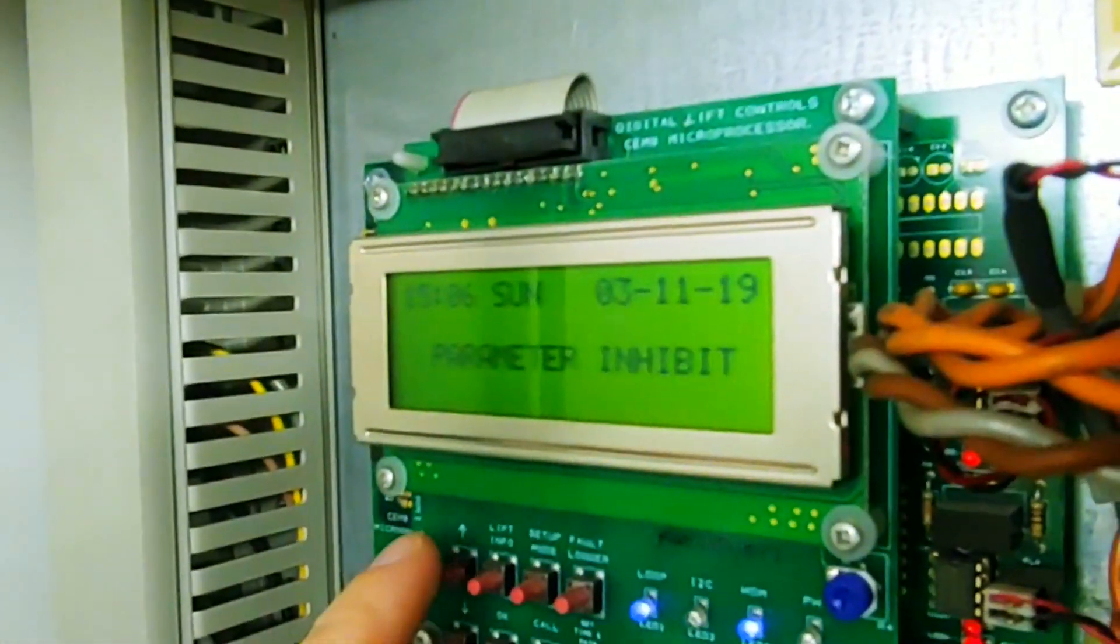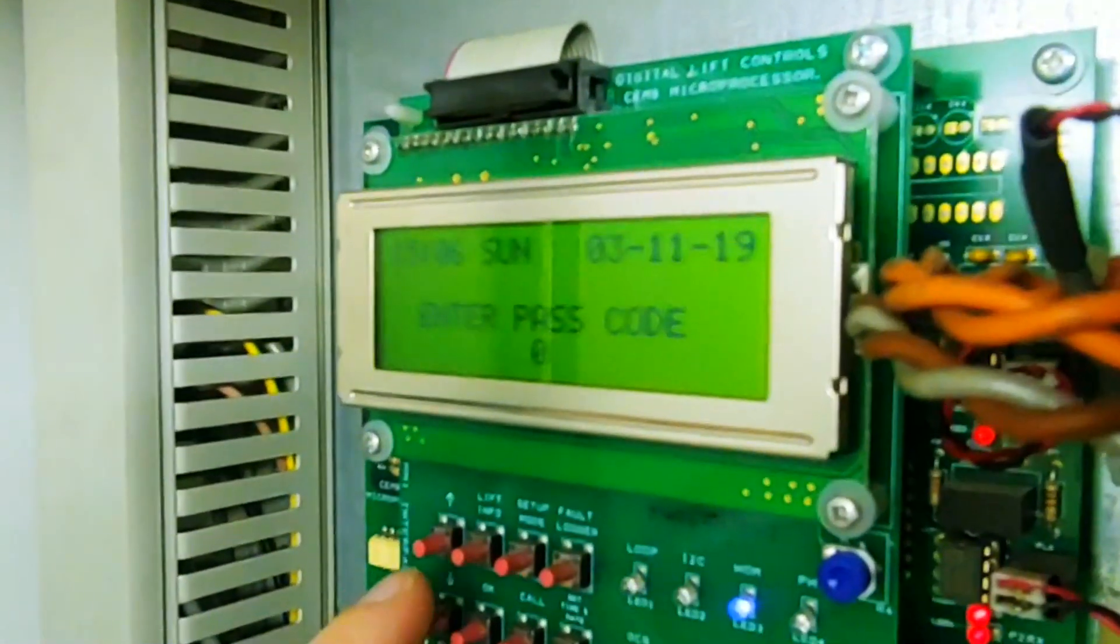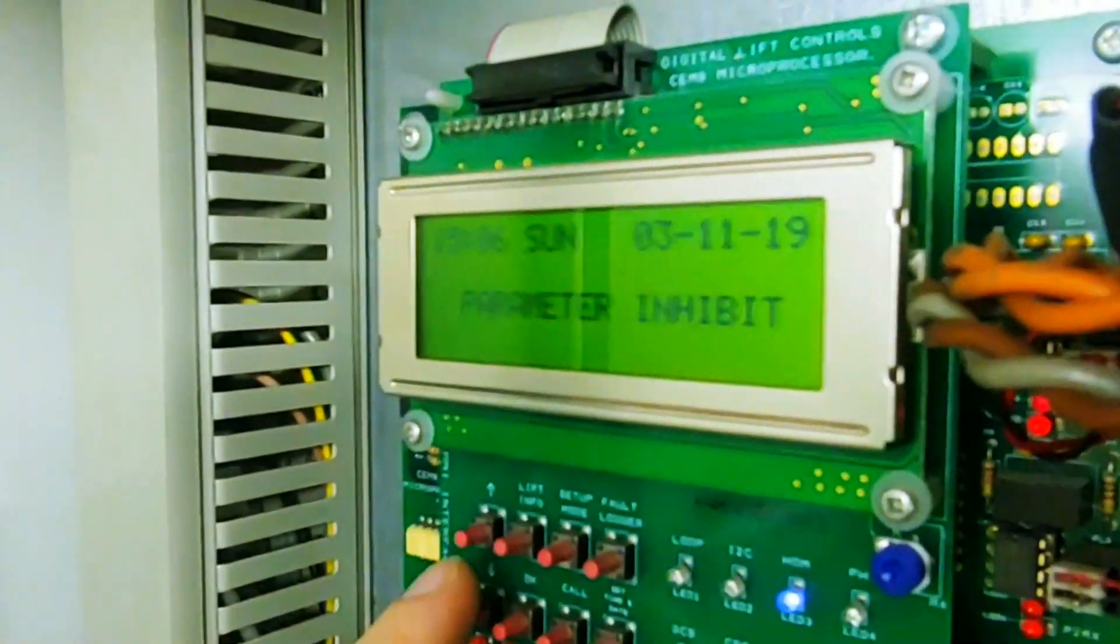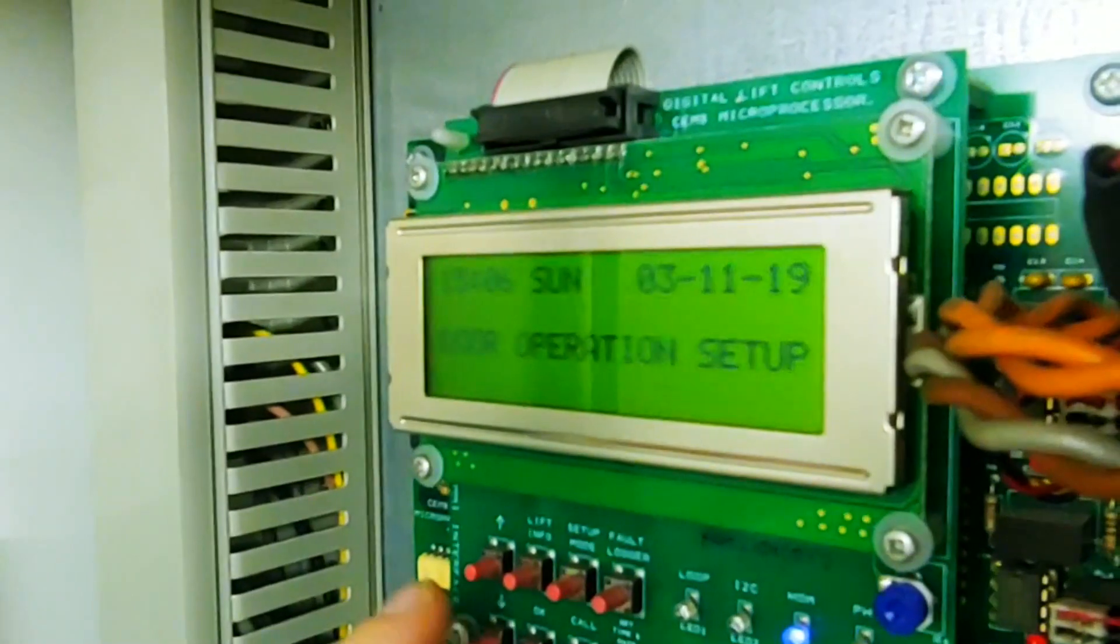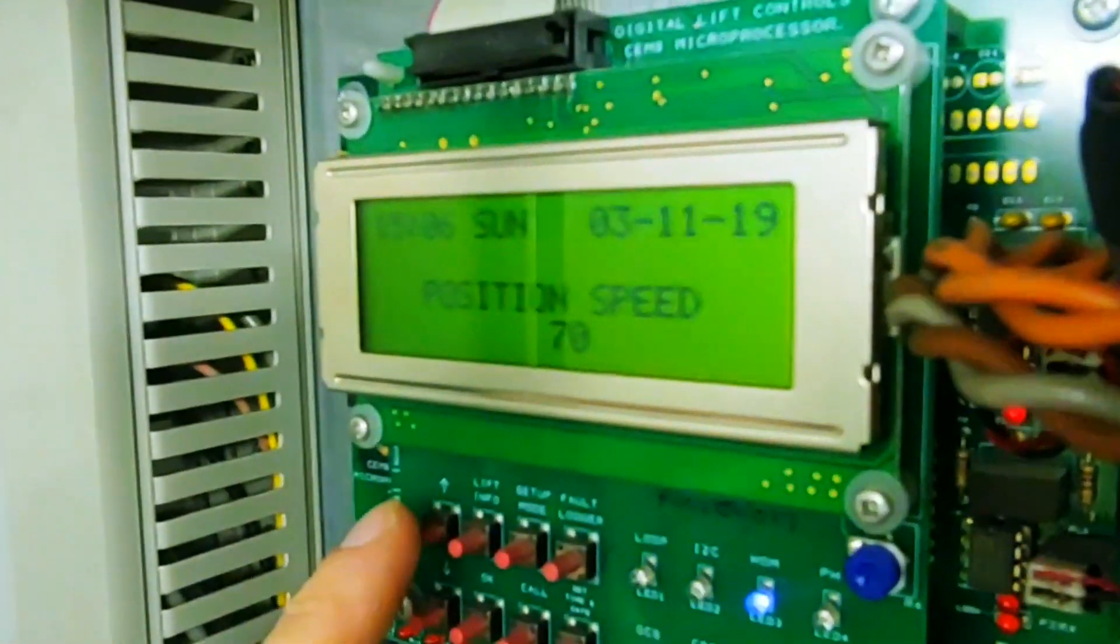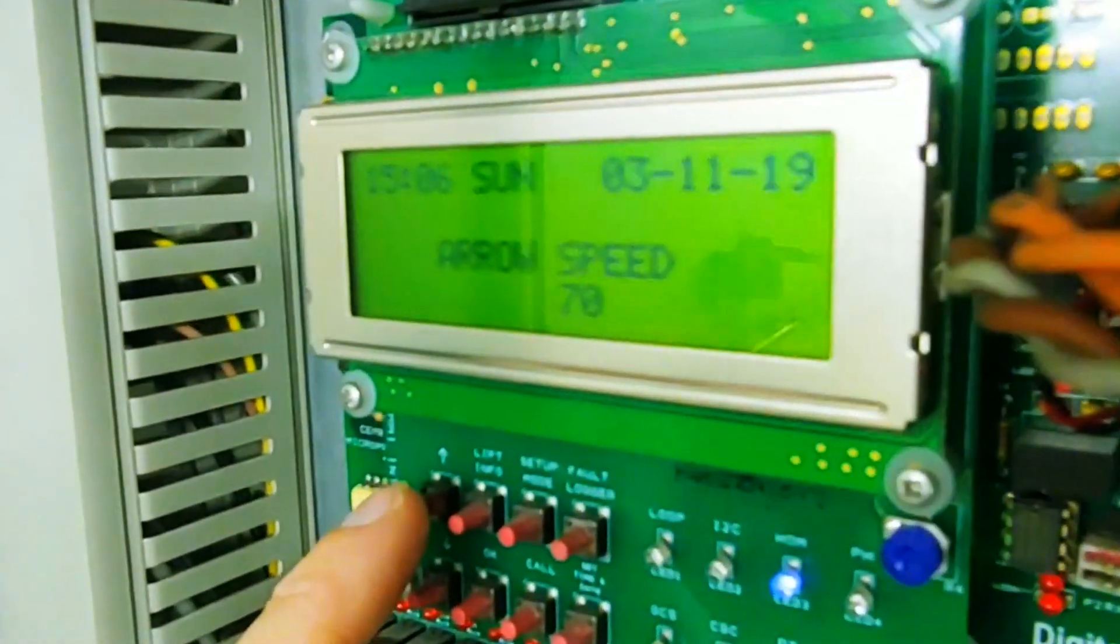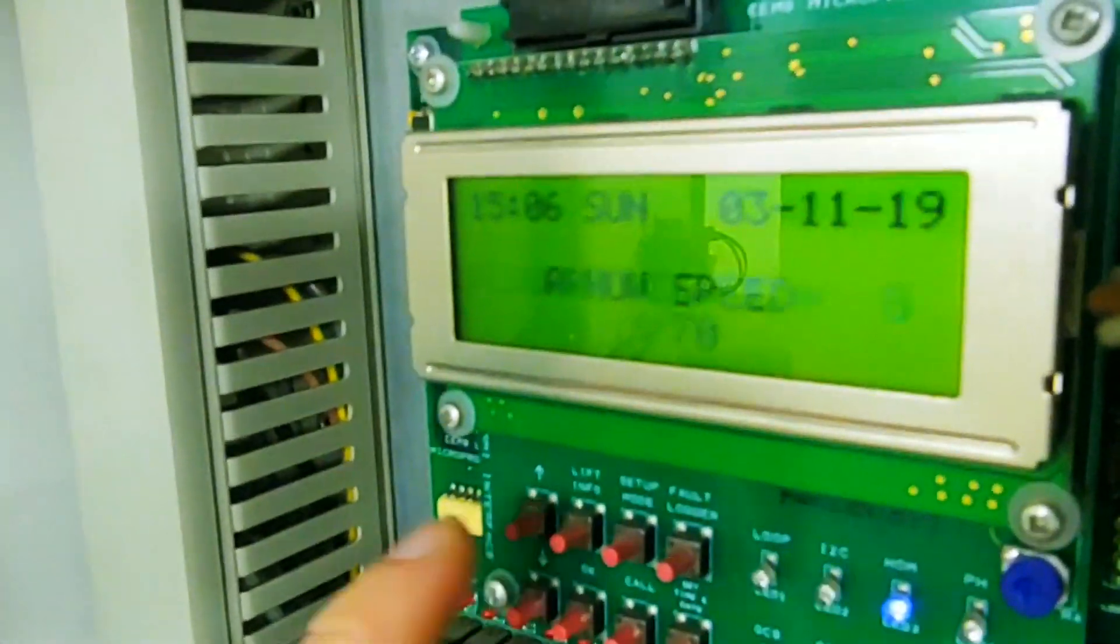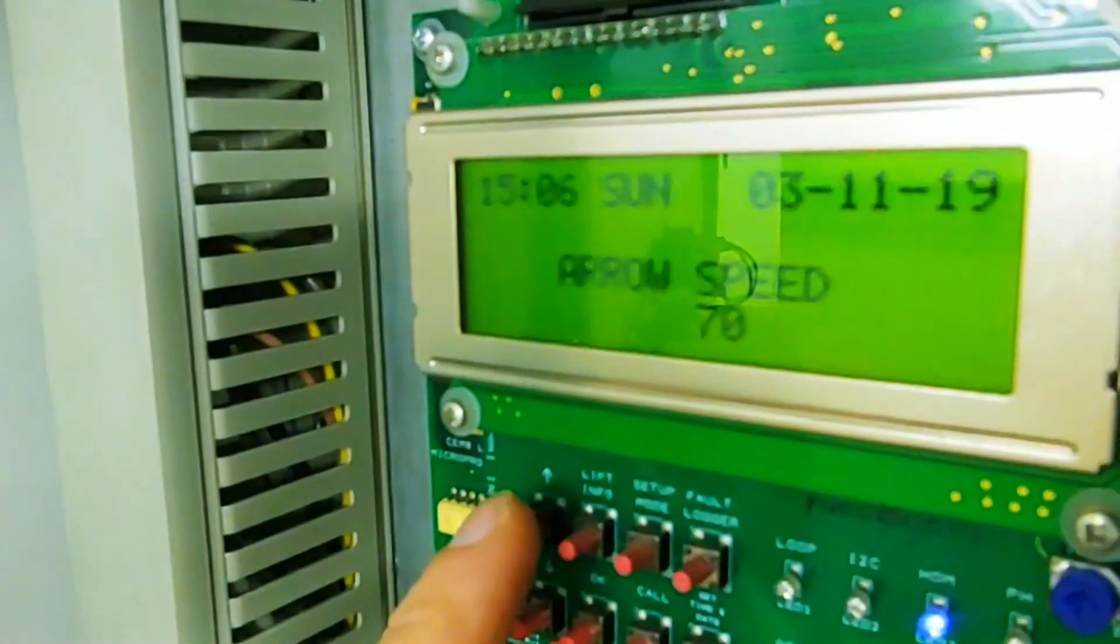So now if we exit that, parameter inhibit, we need a password for that. Lift test modes, lift operation, omega indicator setup. If we go on that, position speed, message speed, arrow speed. So we can set the arrow to go faster on the indicator, that's where you do that.